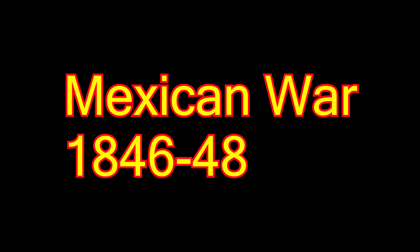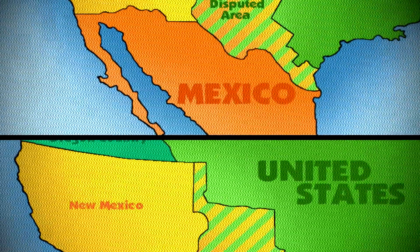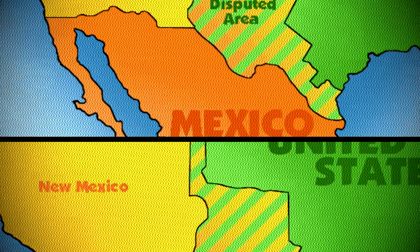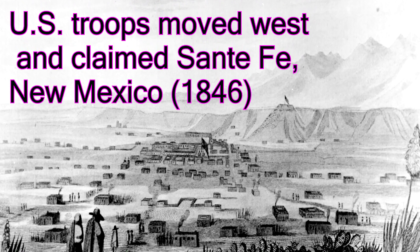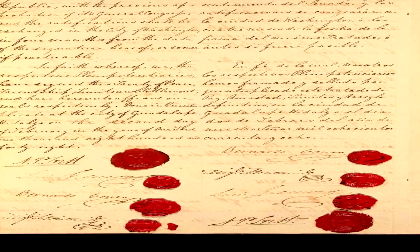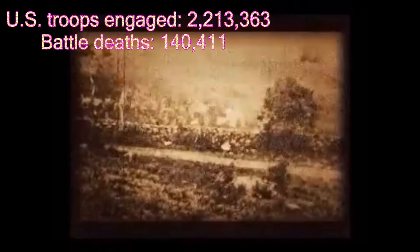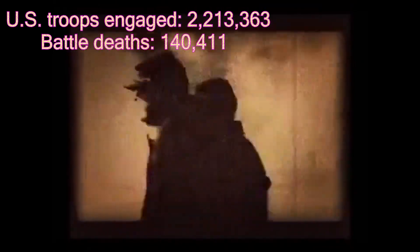Next is the Mexican War, 1846 to 1848. US troops engaged: 78,718; American battle deaths: 1,733. The United States fought Mexico over Texas and California in the name of Manifest Destiny — the belief that the US should possess the entire continent from the Atlantic to the Pacific. US troops claimed Santa Fe, New Mexico in 1846 and California in 1847. The Treaty of Guadalupe Hidalgo was signed in 1848; Mexico gave up two-fifths of its territory and received $15 million from the US.